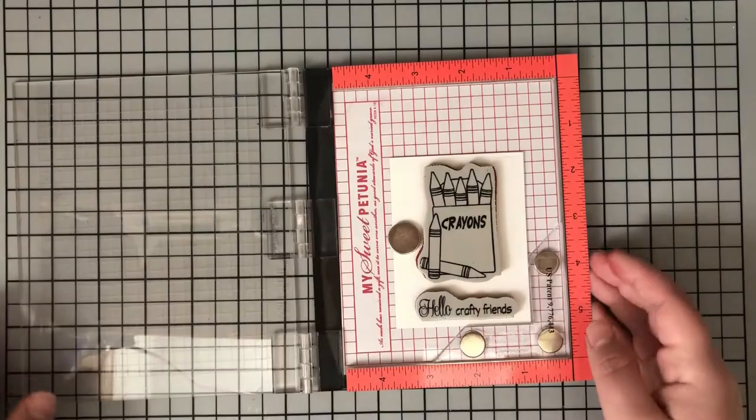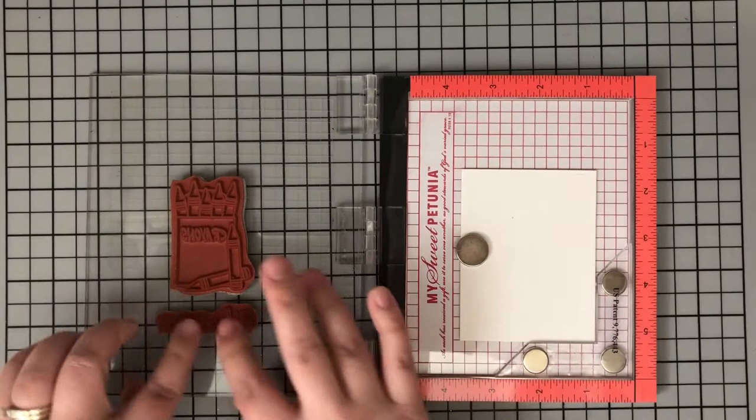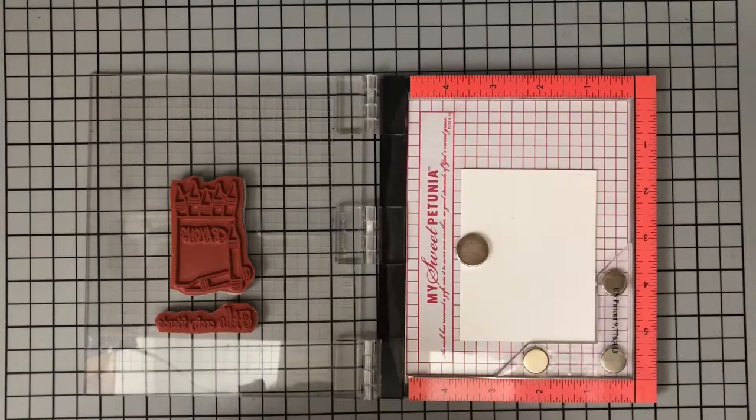But I'm starting stamping on that white cardstock die cut with my little crayon box and hello crafty friend sentiment. I am using my Creative Corners to bump up that piece of cardstock away from the edge in my Mini Misti. I've also taken the foam pad out so I can stamp with my rubber mounted stamps.